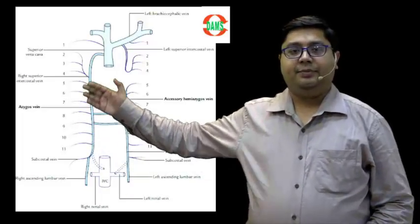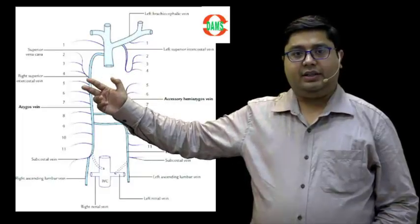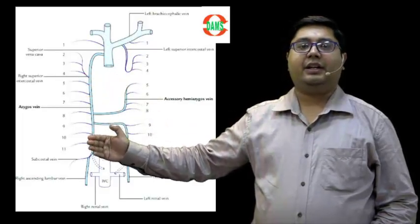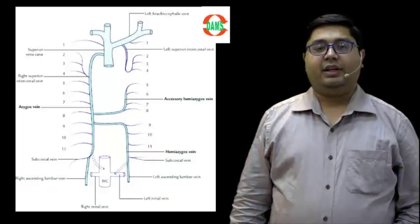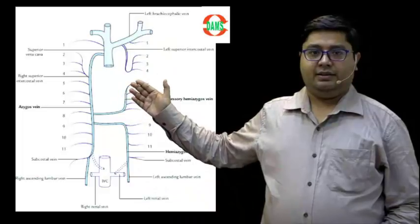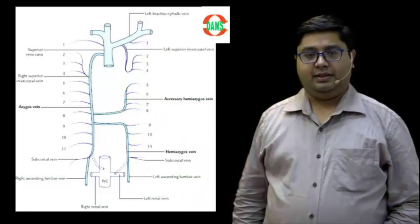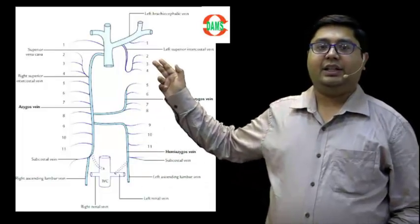On the right side, if we see, first drains into the brachiocephalic, then all other veins either indirectly or directly are draining into azygos system. Whereas left side we have three areas: left brachiocephalic, accessory hemiazygos, and hemiazygos veins.